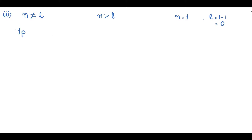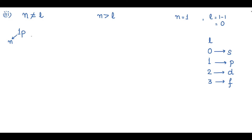The first orbital is 1p. Here n equals 1. Since p corresponds to l equal to 1, we have n equal to 1 and l equal to 1. But l must always be less than n, so l cannot equal n. Therefore, the 1p orbital is not possible.